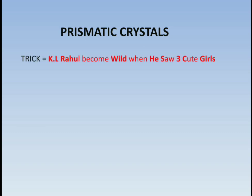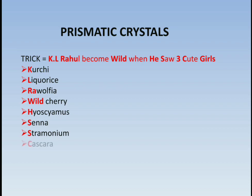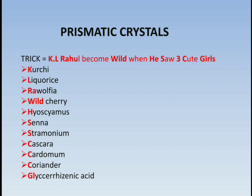So here we have a trick: 'KL Rahul become wild when he saw three cute girls.' K denotes kurchi, L denotes licorice, and Rahul — Ra — denotes Rauwolfia. Wild denotes wild cherry. H denotes hyoscyamus and S denotes senna and stramonium. Three cute means three C: first C is cascara, second C is cardamom, third C is coriander, and 'girls' resembles glycyrrhizic acid.